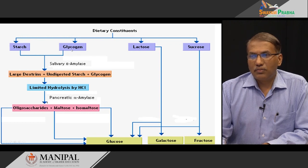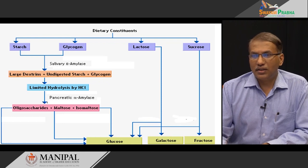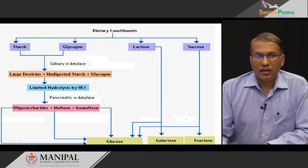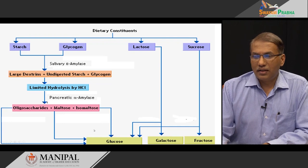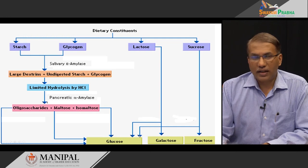Whichever carbohydrate you consume, finally by a series of actions by digestive enzymes — either in the salivary phase or intestinal phase — they will be converted into individual monomers: either glucose, galactose, or fructose.